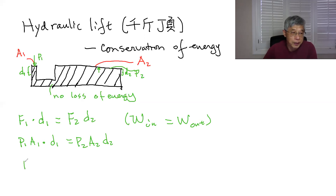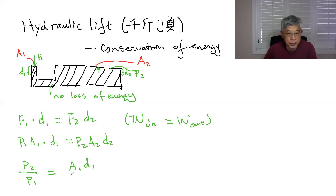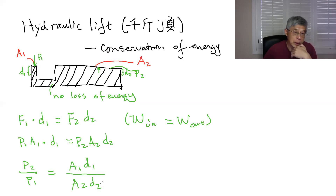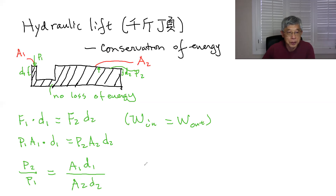So then we can find the ratio of P2 versus P1, which is equal to A1·D1 divided by A2·D2. You can also find the ratio of the forces: F2 versus F1 is going to be D1 over D2.